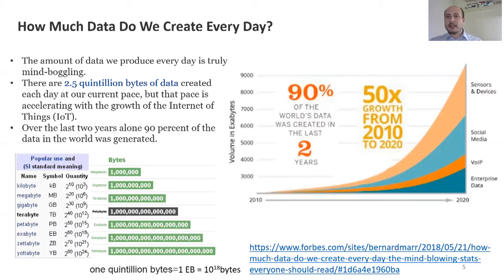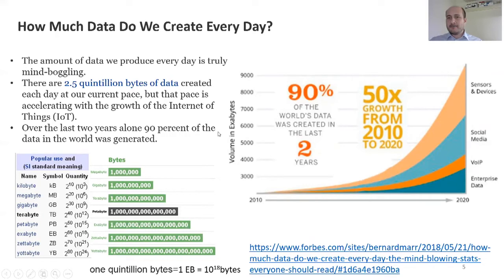So how much data do we create per day? The amount of data we produce every day is truly mind-boggling. There are 2.5 quadrillion bytes of data created each day at our current pace, and that pace is accelerating with the growth of IoT, the Internet of Things. Over the last two years, 90% of the data in the world was generated, and since 2010 the amount of data has grown 50 times. One quadrillion bytes is 10 to the power of 18 bytes, which we call exabytes.